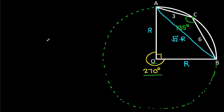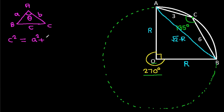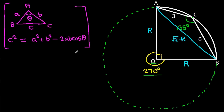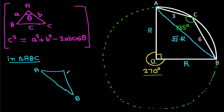Now, in triangle ABC, AC is 3, BC is 6, AB is root 2 times R, and angle ACB is 135 degrees. By the cosine rule, AB squared equals AC squared plus BC squared minus 2 times AC times BC times cos of angle ACB.